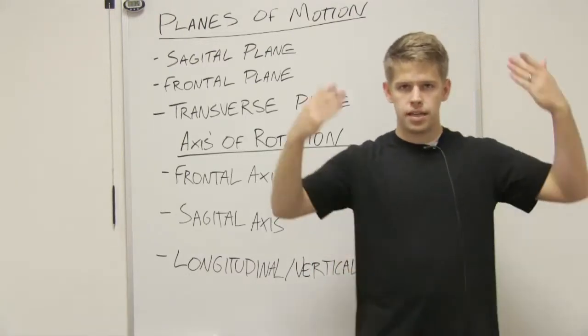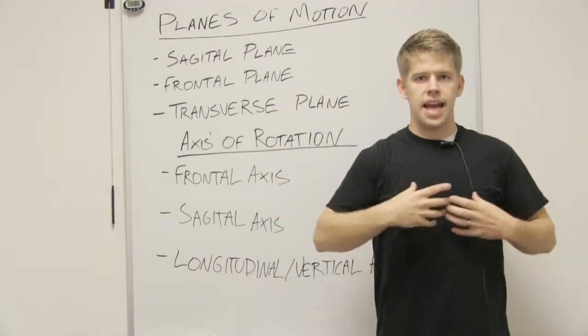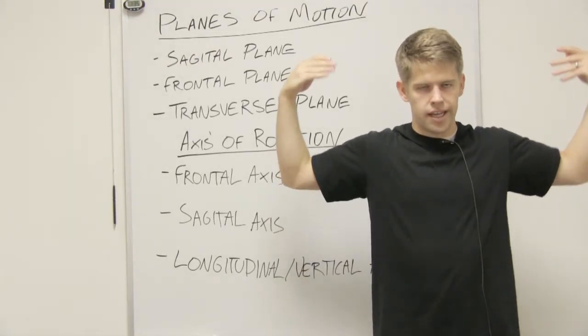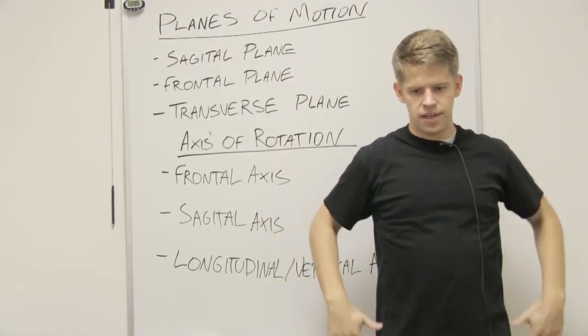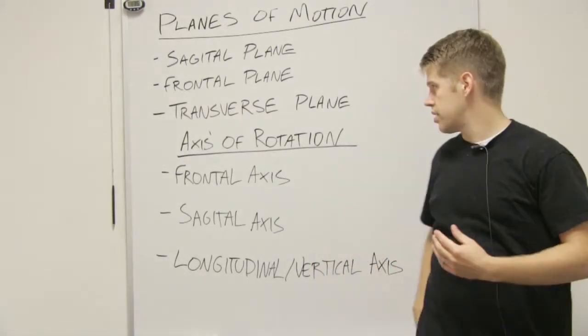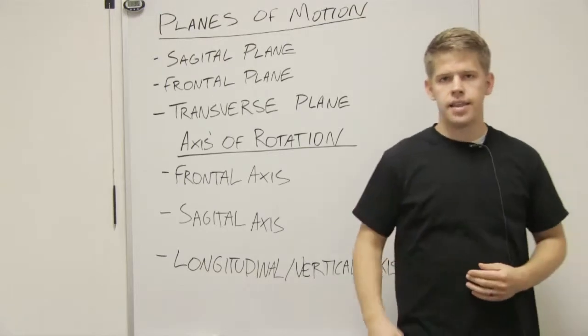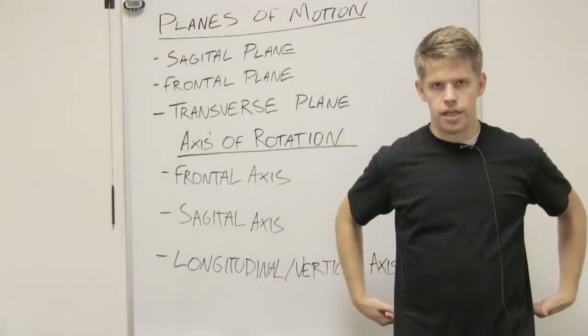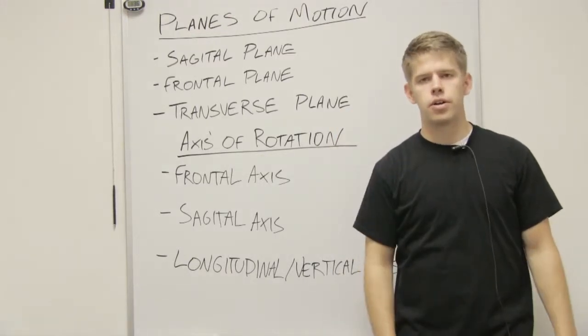Likewise, the frontal plane divides my body into anterior and posterior halves. So if you looked at the frontal plane, you would see almost a piece of paper going through my body, dividing it into anterior and posterior halves. And then the transverse plane bisects my body into superior and inferior halves.